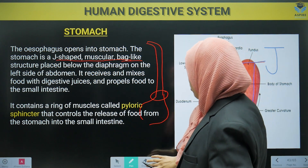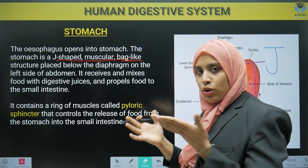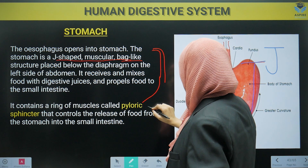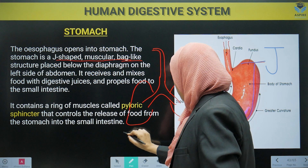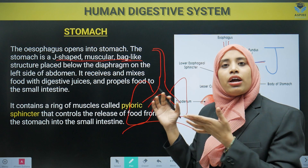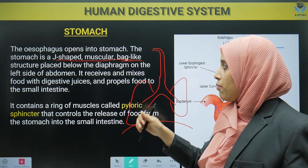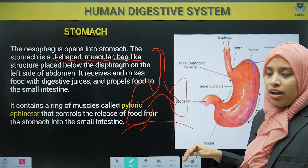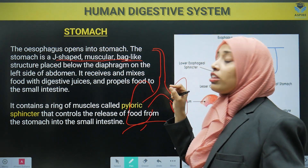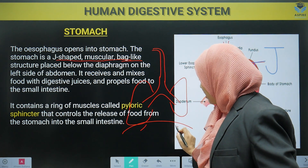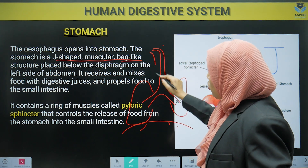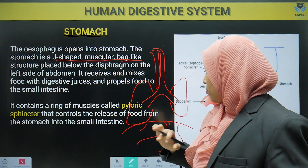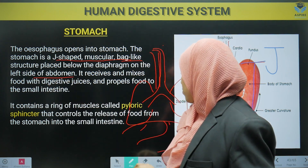As you study the respiratory system, you see there are lungs. The diaphragm is what the lungs stand on and it supports them. Your stomach is placed below the diaphragm, on the left side of the abdomen. There is a food pipe and a wind pipe, and the stomach opens directly below them. So the stomach is below the diaphragm and on the left side of the abdomen.